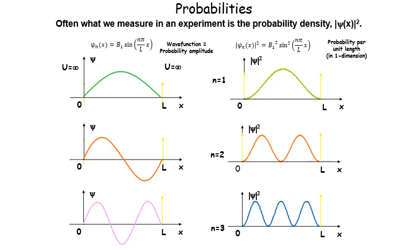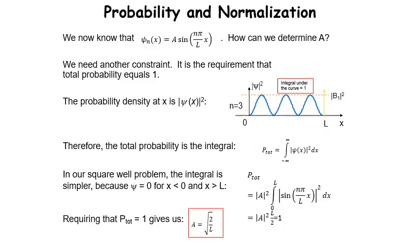What we measure in experiments is the probability density, which is mod of psi squared. The wave function for n equal to 1 and n equal to 3 are given, along with their corresponding probability densities. The heights of the probability peaks differ: the center probability is highest for n=1, while for n=3 there are nodes where the probability is zero. The normalization constant A is found to be root(2/L).